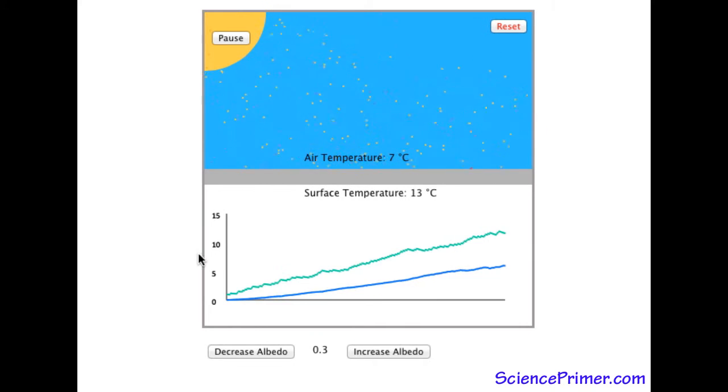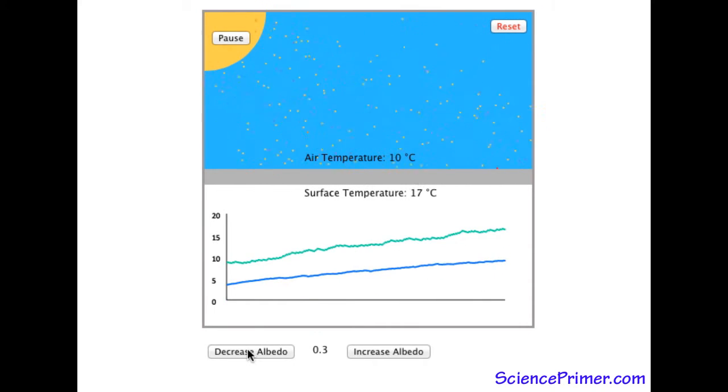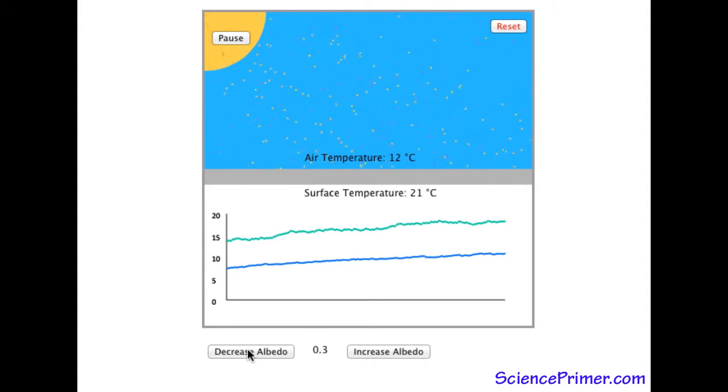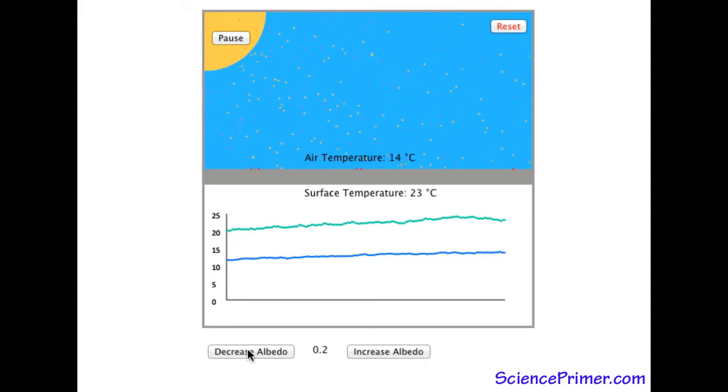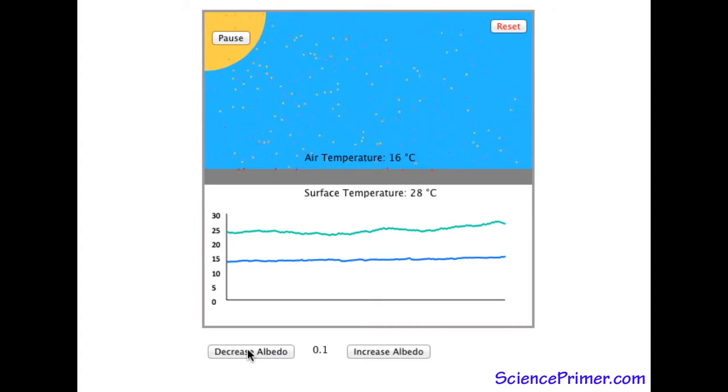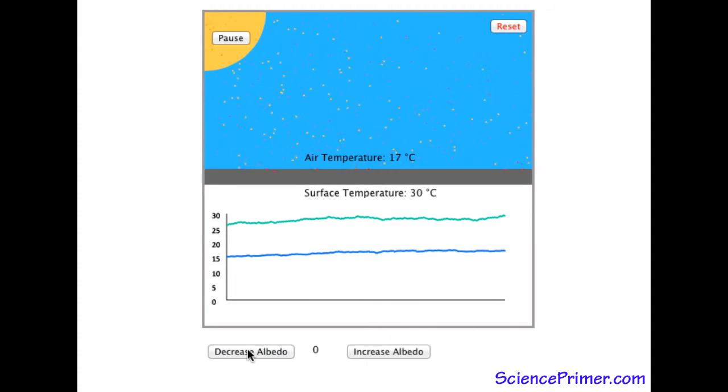Adjusting the value of albedo shows the relationship between albedo and temperature. Decreasing the albedo raises the temperature of the surface. As the surface temperature rises, the air temperature goes up as well.